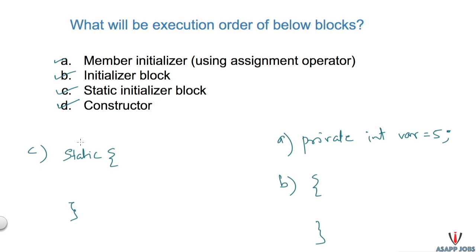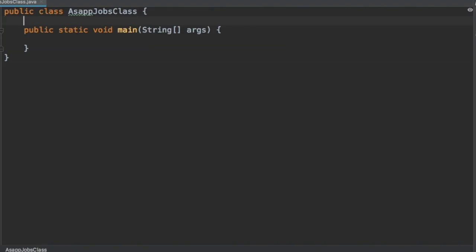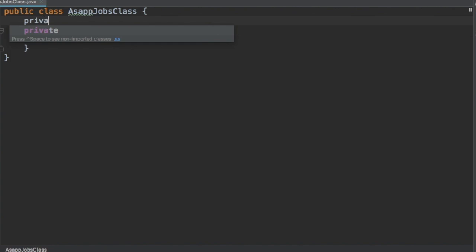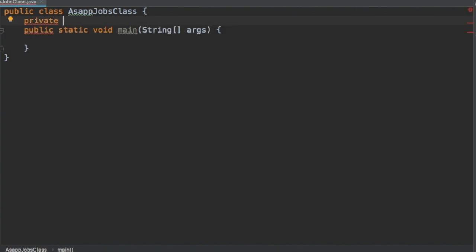Now let's go to our code editor and write some code defining all these definitions. We will see which part executes first. This is our program with our main method, and here I am creating one instance of the test class.